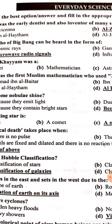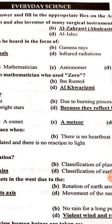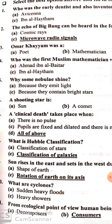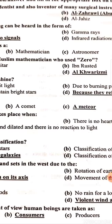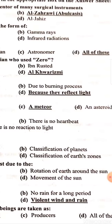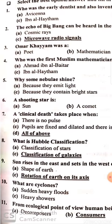Why do some nebulae shine? Because they reflect light. A shooting star is a meteor. Clinical death takes place when there is no pulse, pupils are fixed and dilated, and there is no reaction to light and no heartbeat — all of the above.